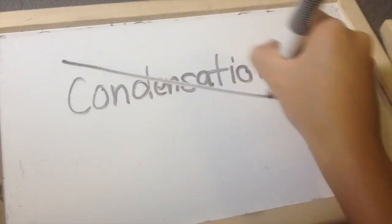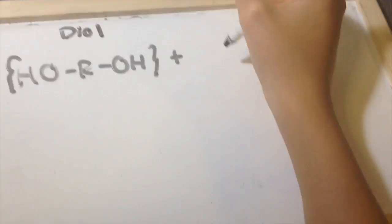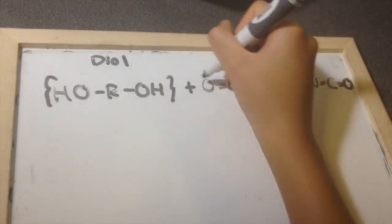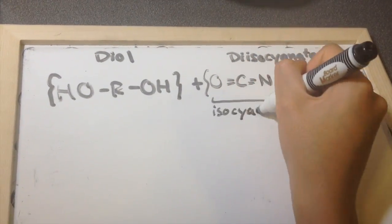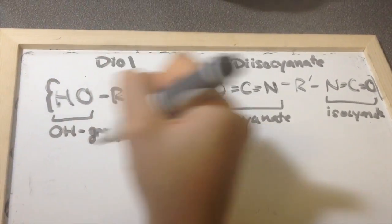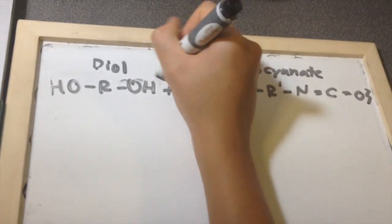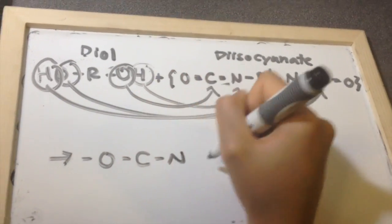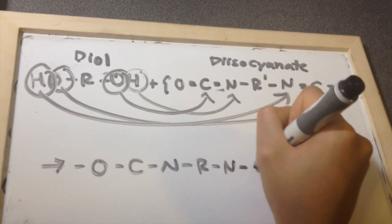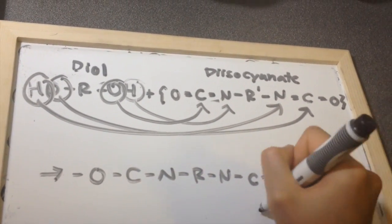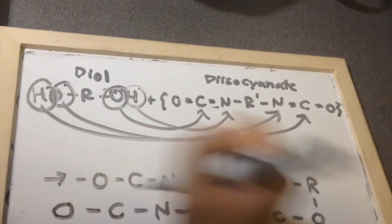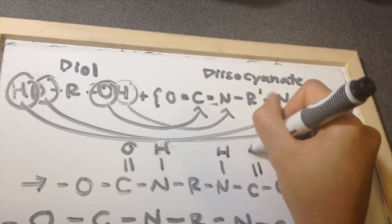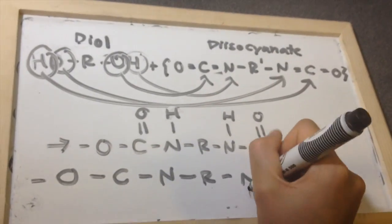The polymerization of polyurethane is not a condensation polymerization, meaning that no molecules are lost during the process. Polyurethane is formed when the hydrogen atom detaches from alcohol to join with the nitrogen atom in the isocyanate group, while the oxygen atom from the alcohol detaches to link with the carbon atom in the isocyanate group. This reaction is an exothermic reaction as a new bond is formed.